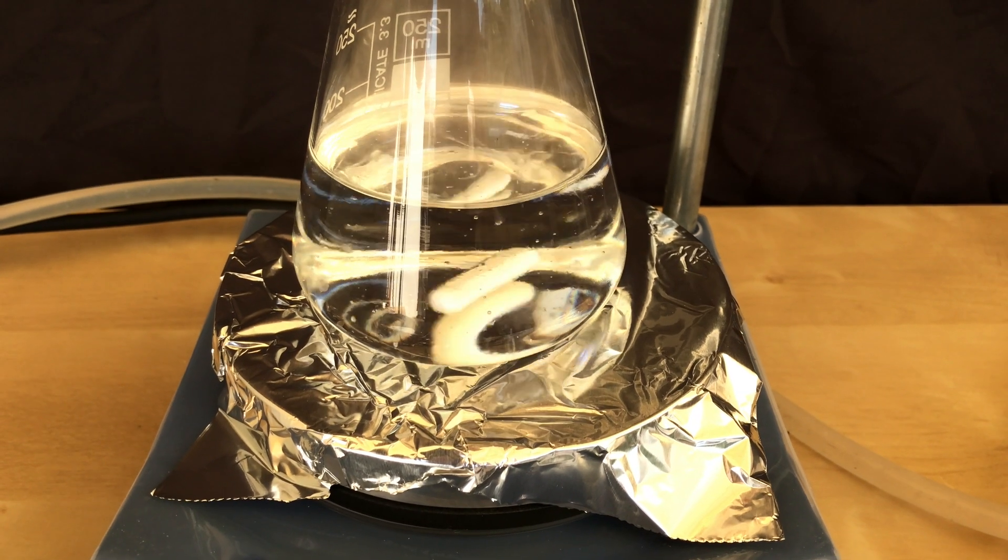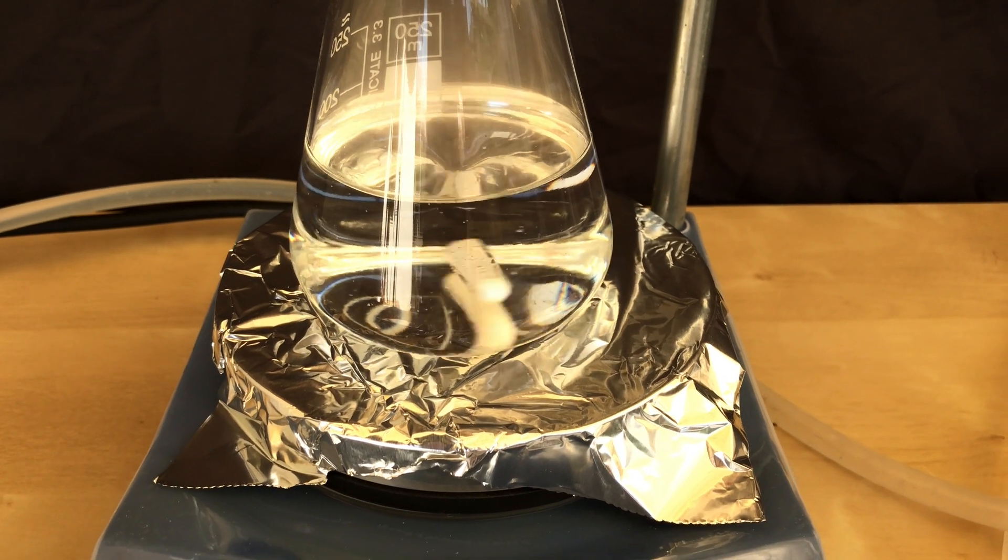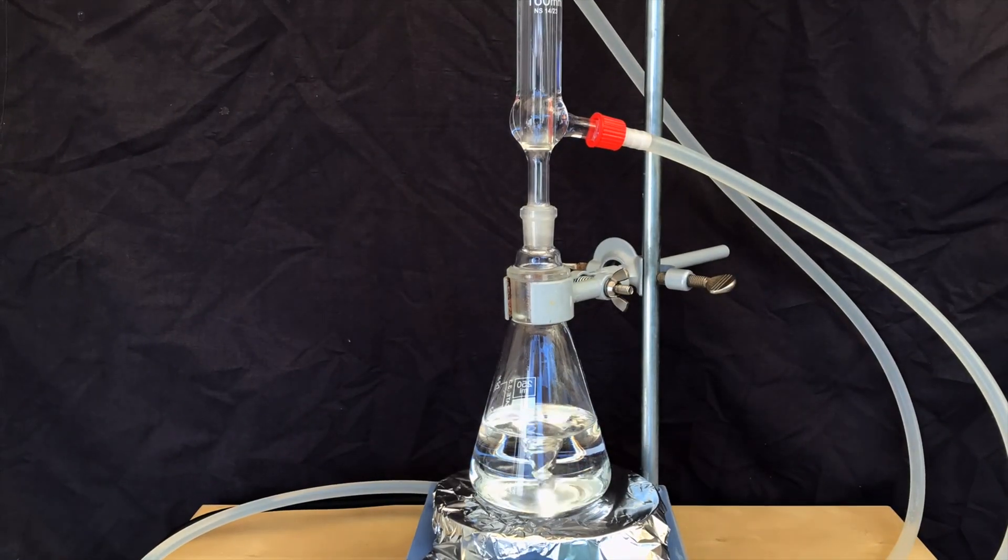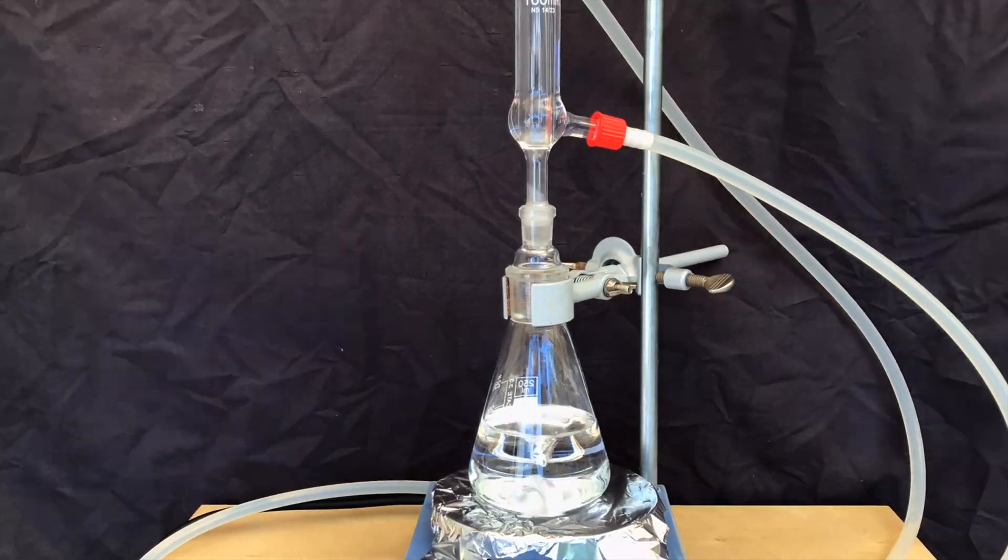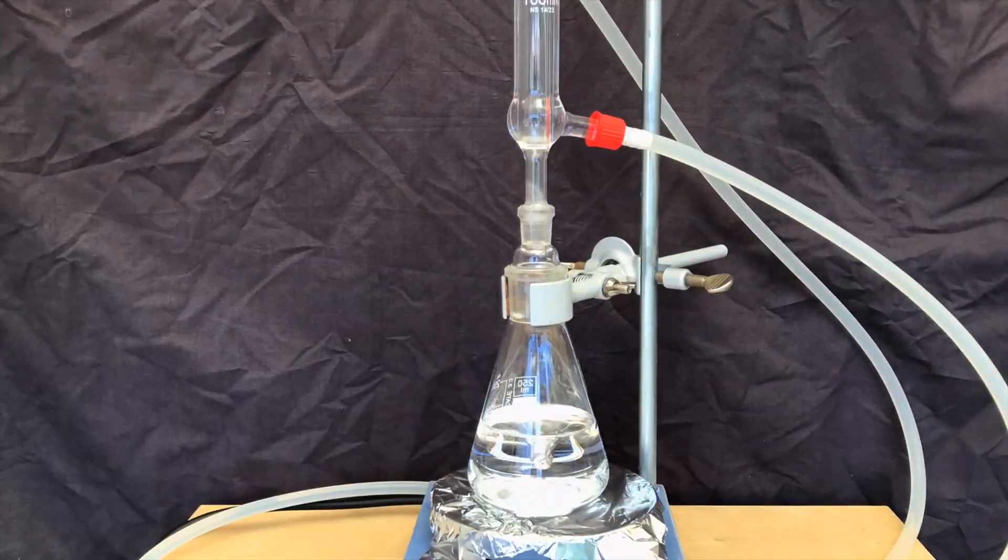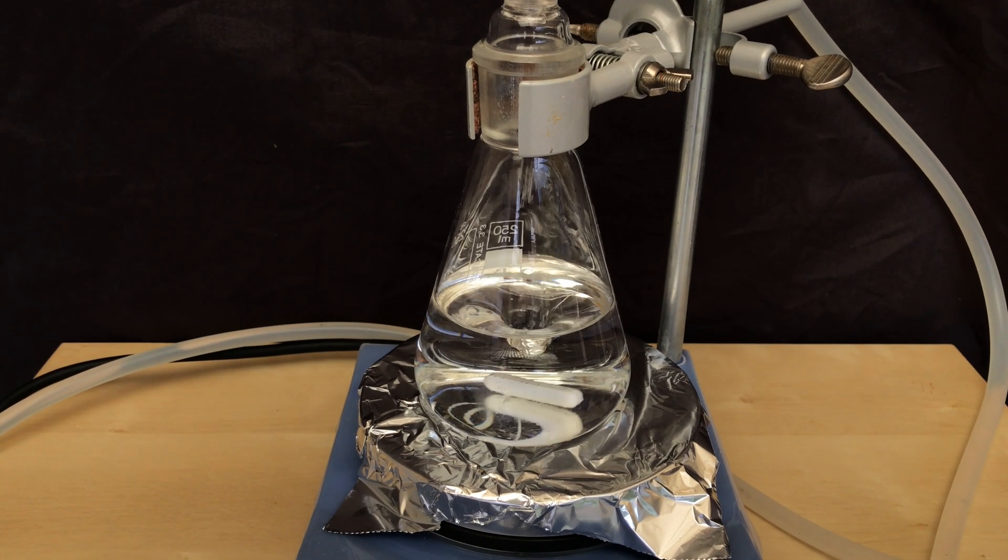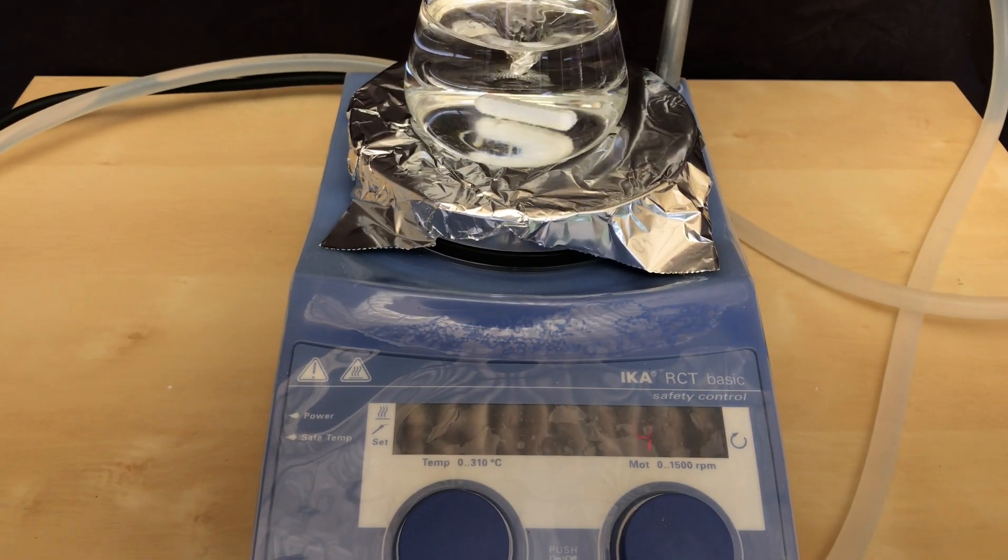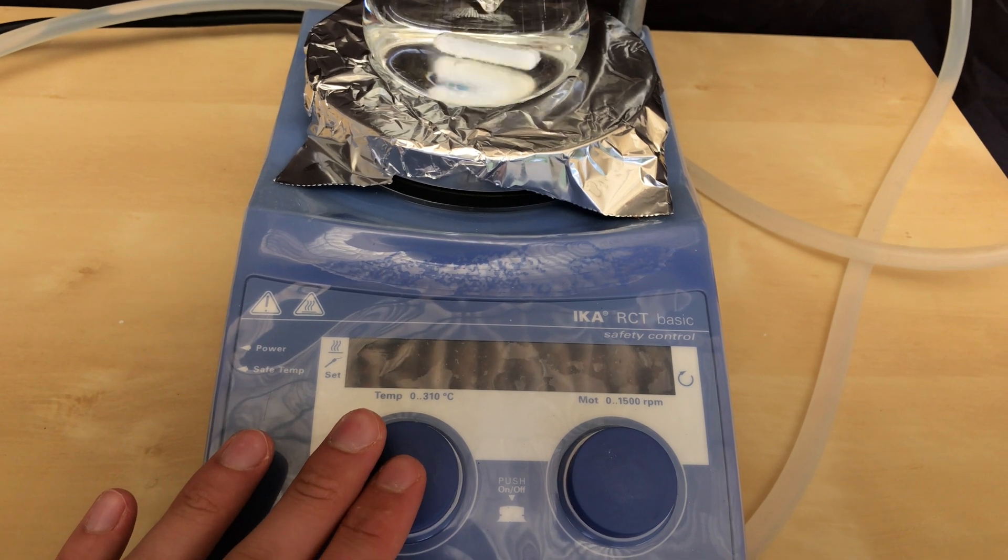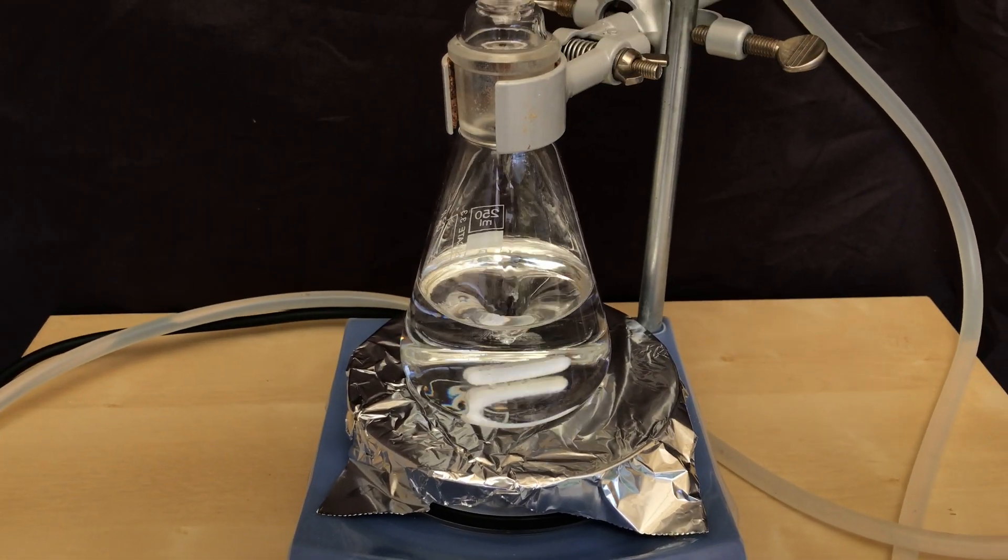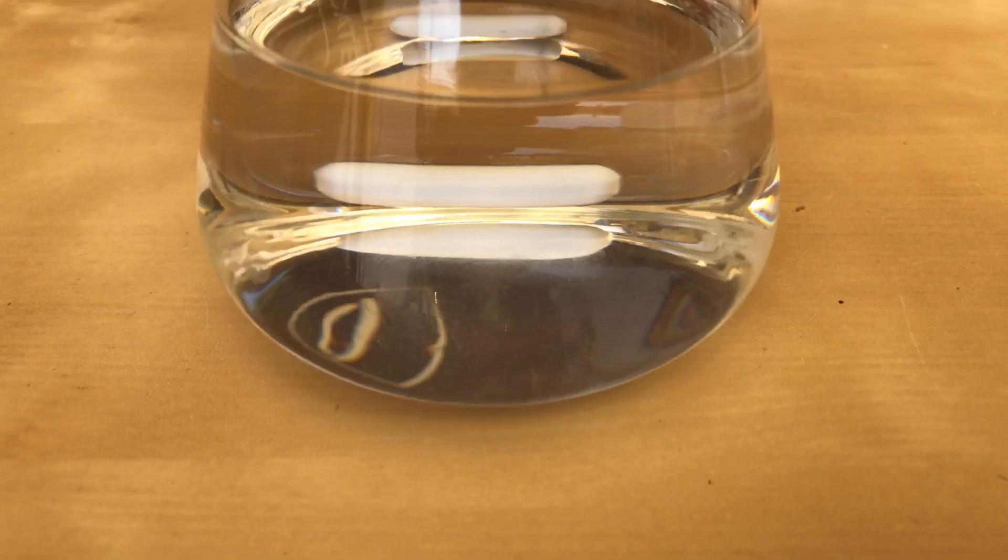A reflux was set up and heating and stirring were then turned on. To ensure complete hydrolysis of the DMF we refluxed for 5 entire hours. During this time the DMF should hydrolyze to form formic acid and dimethylamine which later reacts to form dimethylamine chloride. The moment the 5 hours passed, the hot plate was turned off and we allowed it to cool back down to room temperature.